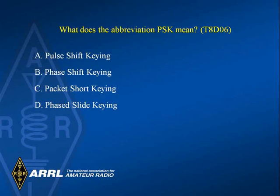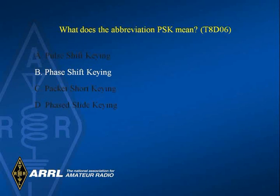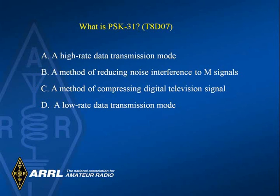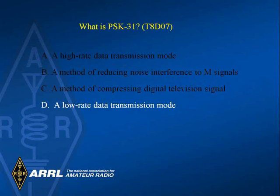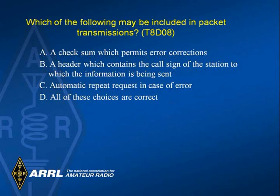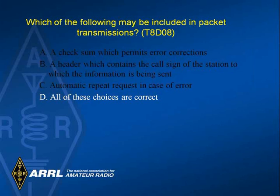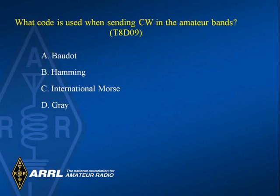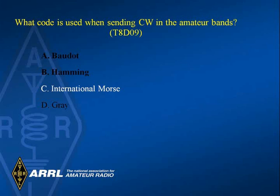What does the abbreviation PSK mean? Answer B: Phase shift keying. What is PSK31? Answer D: A low rate data transmission mode. Which of the following may be included in packet transmissions? Answer D: All of these choices are correct. What code is used when sending CW in the amateur bands? Answer C: International Morse code.